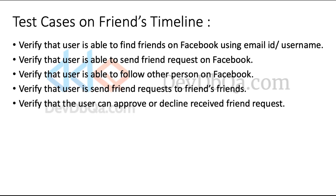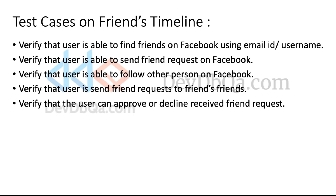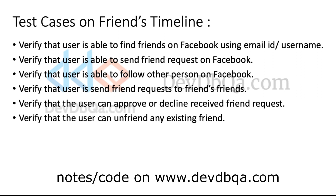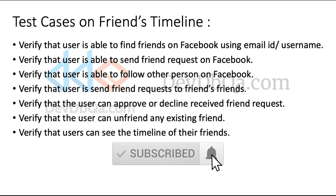Verify that user can approve or decline friend requests received by the user. Verify that user can unfriend any existing friend — the user should be able to unfriend or block any existing friend. Verify that user can see the timeline of their friends.